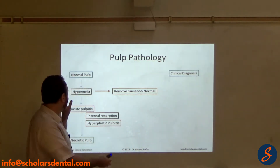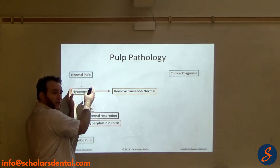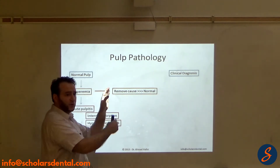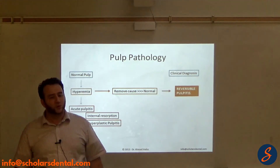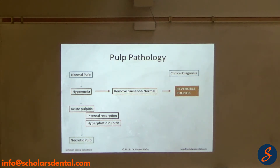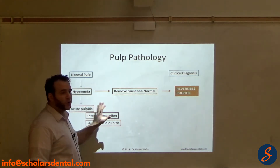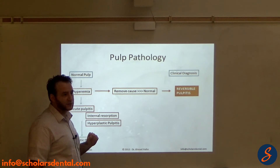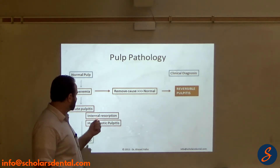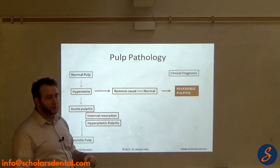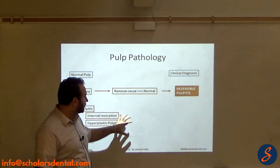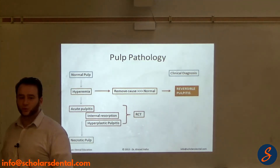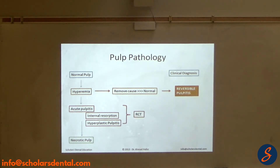When the tooth is at this level of histology and pathology, if we remove the cause it goes back to normal, so clinically we call that reversible pulpitis. And in the next stage, it doesn't go back even if we remove the cause — whether it's acute pulpitis, internal resorption, or hyperplastic pulpitis. So technically all of these need root canal treatment, and because they need root canal treatment, we say clinically they're all irreversible pulpitis.